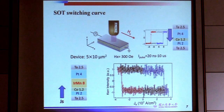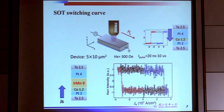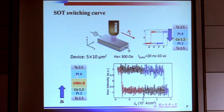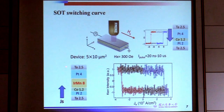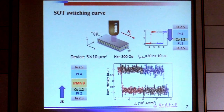Compared to samples without IrMn, we already see a different behavior. As mentioned, the interface is very different. It seems that with the presence of IrMn, the spin current generated from the top platinum does not have as large an effect on the ferromagnetic cobalt layers.